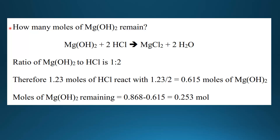Next, how many moles of magnesium hydroxide remain? The ratio of magnesium hydroxide to hydrochloric acid is 1 to 2 according to the balanced equation. We calculated 1.23 moles of hydrochloric acid, so 1.23 moles of HCl reacts with half as much magnesium hydroxide — that is 0.615 moles. The initial moles of magnesium hydroxide was 0.868, and subtracting 0.615 leaves 0.253 moles of magnesium hydroxide remaining.